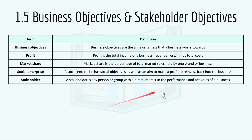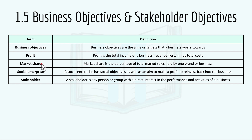Key terms for 1.5: business objectives are the aims or targets that a business works towards. Profit is the total income or revenue of a business less or minus total costs. Market share is the percentage of total market sales held by one brand or business, using the formula shown. A social enterprise has social objectives as well as an aim to make a profit to reinvest back into the business. A stakeholder is any person or group with a direct interest in the performance and activities of a business.